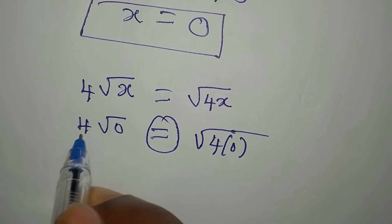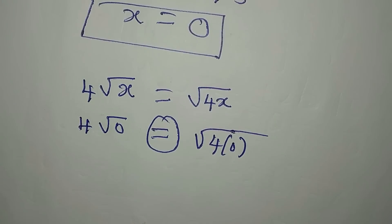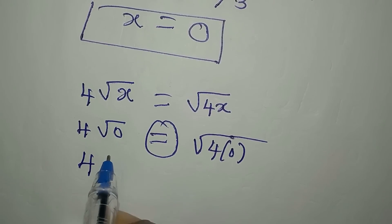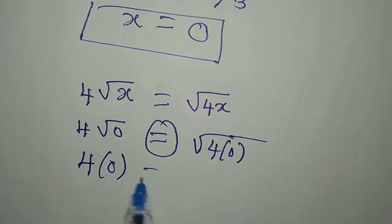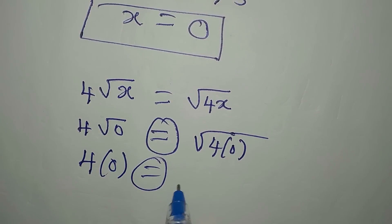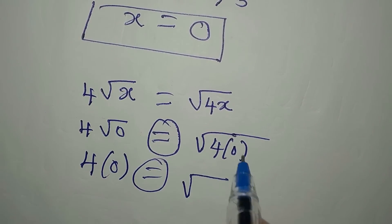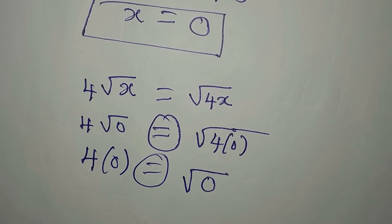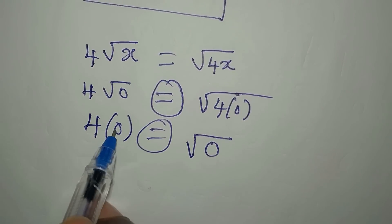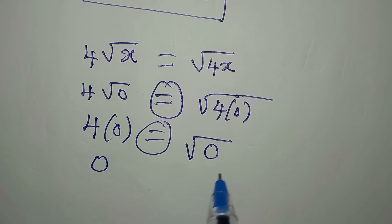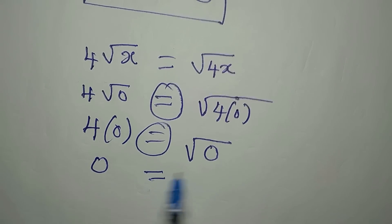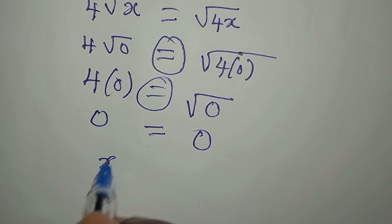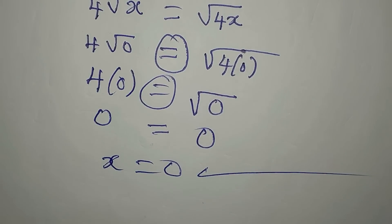And here, now we're going to have 4 times 0. We have 4 square root of 0 is 0. We have 4 times 0. On the other side, we have square root of 4 times 0 is 0. Now 4 times 0 right here is equal to 0. And here, we have square root of 0 is still 0. So our x equals 0 satisfies the equation.